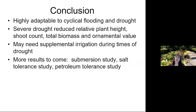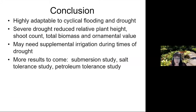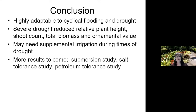In conclusion, these are highly adaptable grasses, adaptable to cyclical flooding and drought. Five of the seven I would recommend in a rain garden setting. Severe drought did reduce their growth and ornamental value, but most plants can handle mild to moderate drought. However, if we get into a really severe drought like last year in western North Dakota, at that point you may need to supplementally irrigate your rain gardens and ornamental landscape.